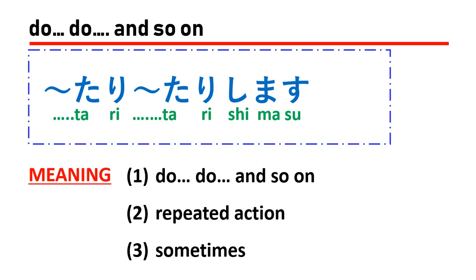This structure has three meanings. The first meaning is to list some actions representing what you are doing. The second meaning is to repeat an action. The third meaning, translated to English, means 'sometimes.' So when you see the structure of nani nani tari nani nani tari shimasu, you should learn how to understand which meaning fits the sentence.